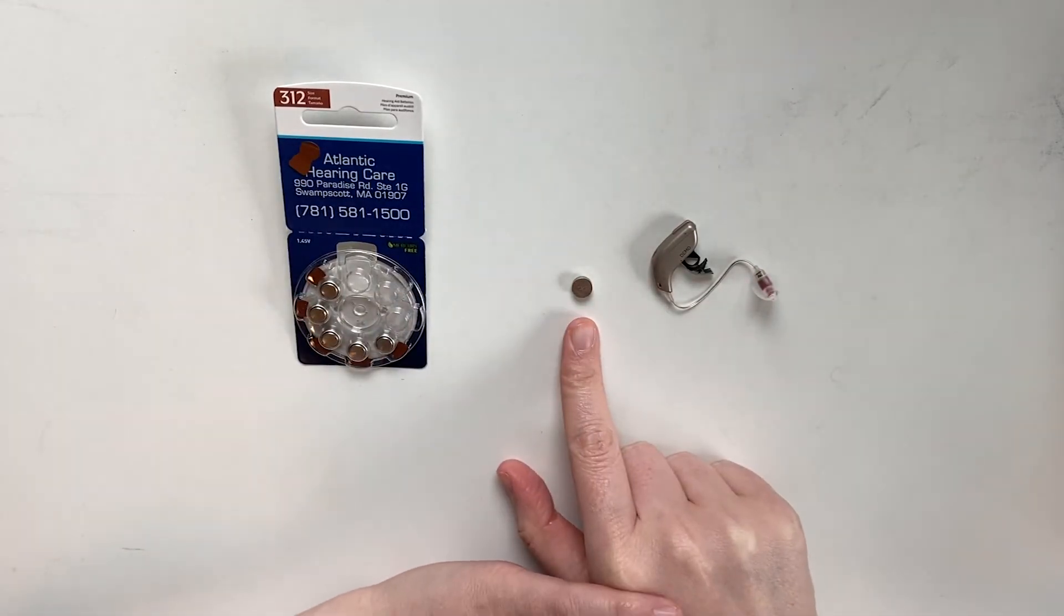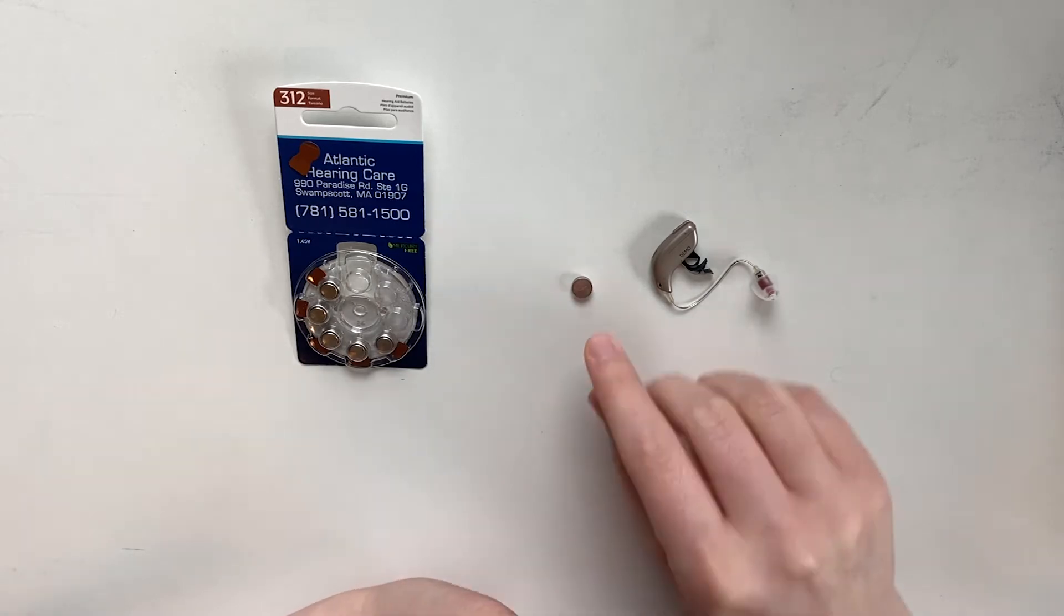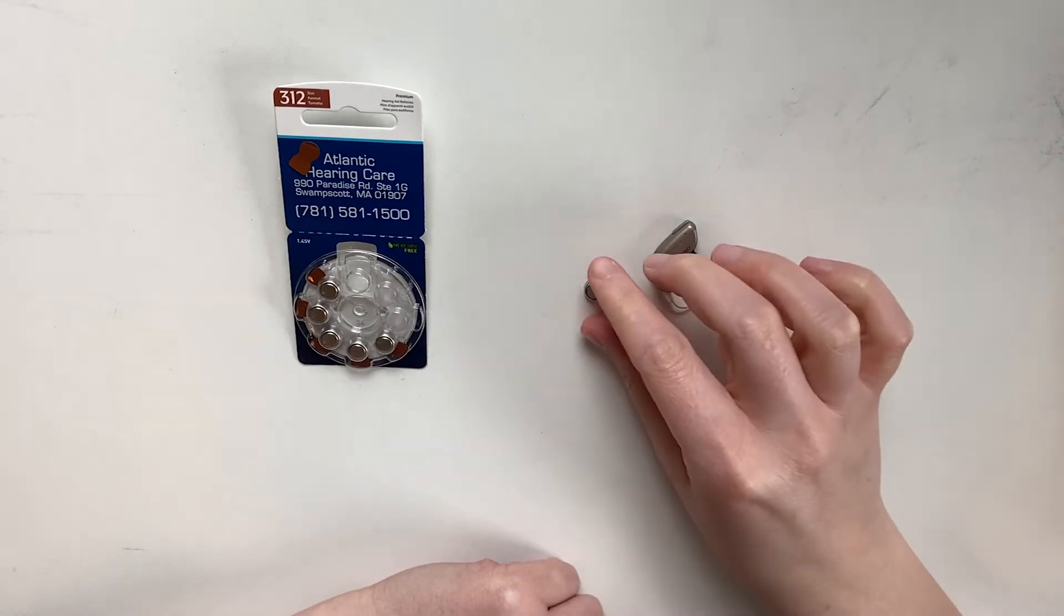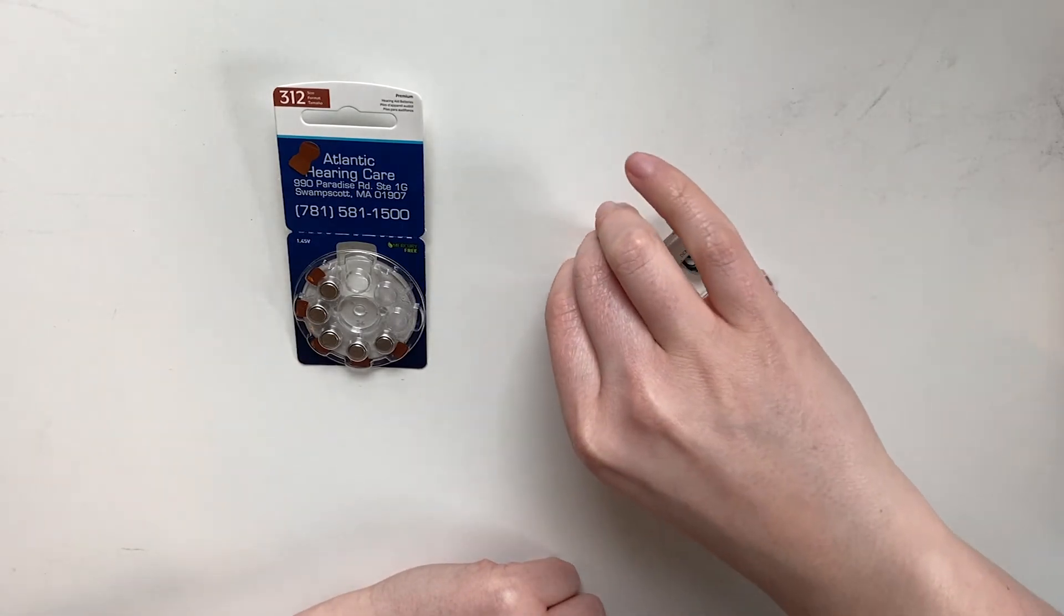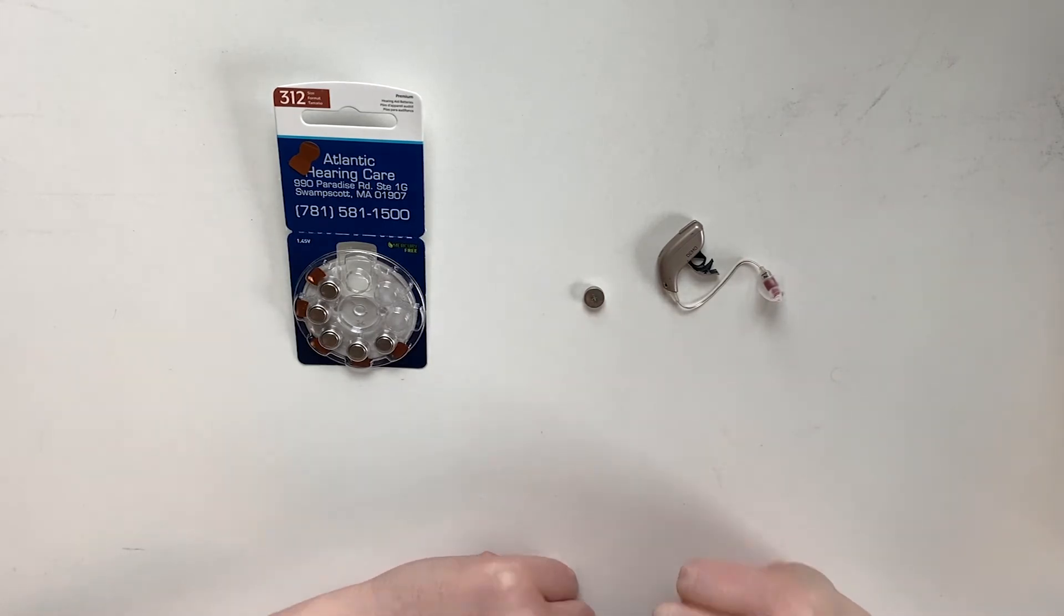When we're putting the battery in, we see that there's a flat side or positive side, and then a side with a little ridge on it or the negative side. We want that flat positive side to be facing upwards towards us.